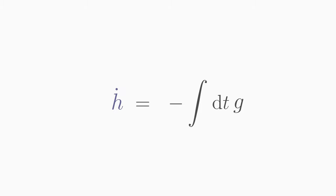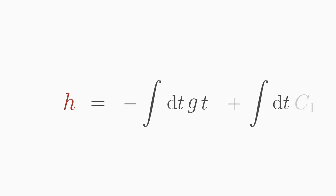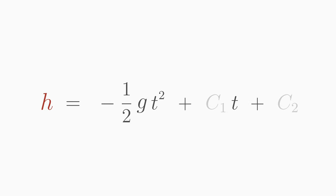Then we get h dot is equal to minus g times t plus c1, where c1 is an integration constant. Then we integrate again over time. Then we get h is equal to minus one half g t squared plus c1 t plus c2, where c2 is another integration constant.